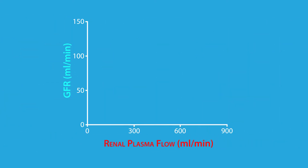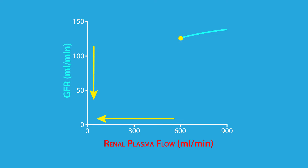Under normal physiological conditions, the renal plasma flow is about 600 milliliters per minute, while the GFR is about 125 milliliters per minute. Increases in renal plasma flow lead to increased GFR, but only slightly, while decreases in renal plasma flow lead to a dramatic decrease in GFR. Even though GFR is decreased at lower rates of renal plasma flow, a larger fraction of the fluid is filtered, because as fluid moves more slowly across the glomerular capillary, it has more time to filter.